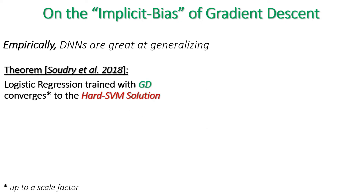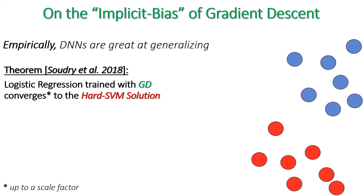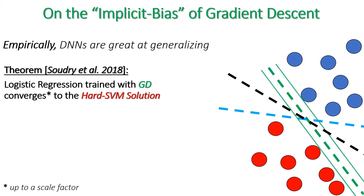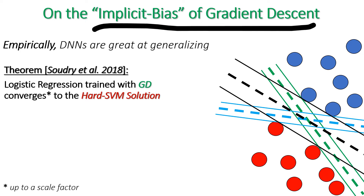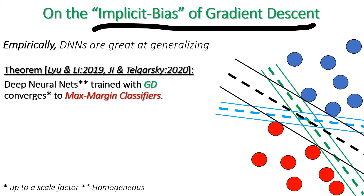Soudry et al. showed that on separable data, a logistic regression classifier trained with gradient descent converges to the maximum margin solution, similar to hard SVM, which is known to generalize better. This is called the implicit bias of gradient descent, and it was later generalized to deeper networks.